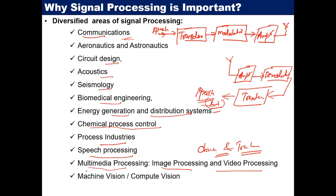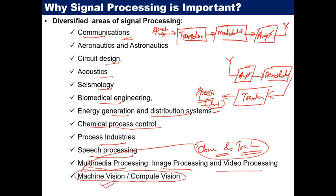The advanced version of object detection and tracking is covered inside different subjects such as machine vision and computer vision. But again, the basic building concept used is signal and system theory.